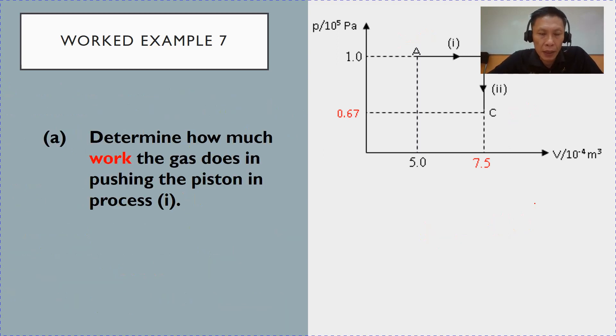Firstly, part A. Determine the work done by the gas in pushing the piston in this process 1, constant pressure. So, for this part, it is pretty straightforward.